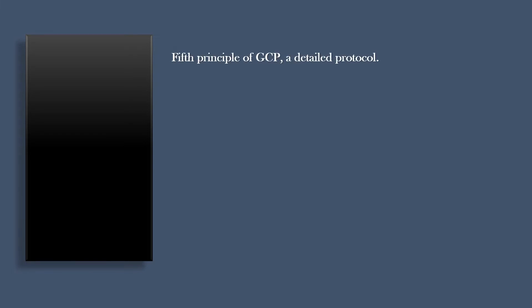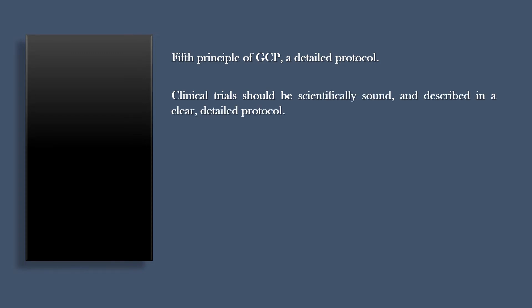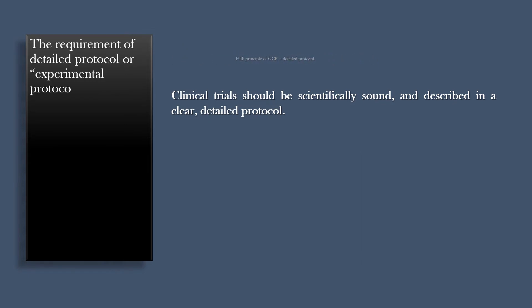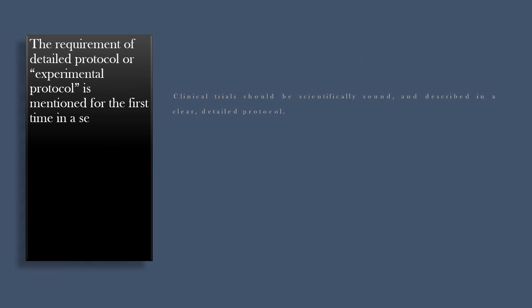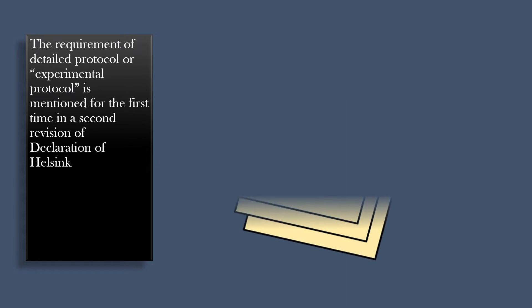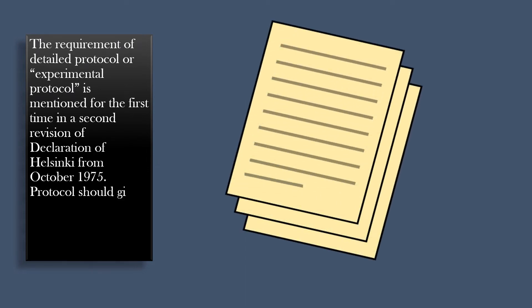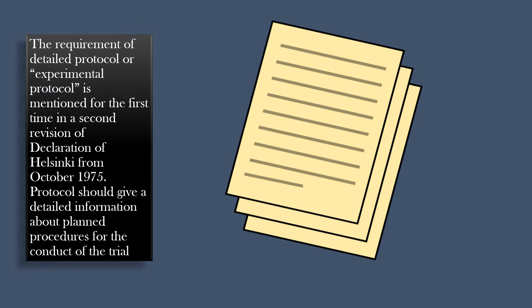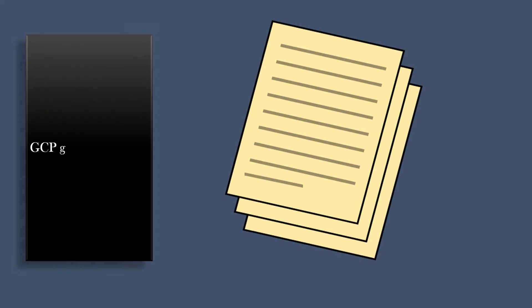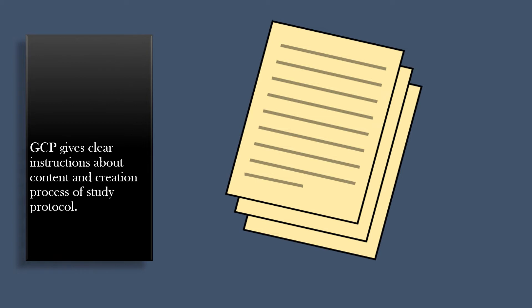The fifth principle of GCP is a detailed protocol. Clinical trials should be scientifically sound and described in a clear, detailed protocol. The requirement of a detailed experimental protocol is mentioned for the first time in the second revision of the Declaration of Helsinki from October 1975. Protocol should give detailed information about planned procedures for the conduct of the trial, and GCP gives clear instructions about the content and creation process of a study protocol.